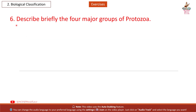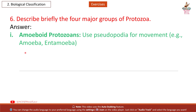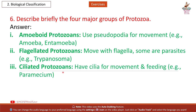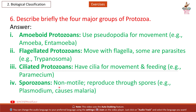Question 6: Describe briefly the four major groups of protozoa. Answer: (1) Amoeboid protozoans — use pseudopodia for movement, e.g., Amoeba. (2) Flagellated protozoans — move with flagella; some are parasites, e.g., Trypanosoma. (3) Ciliated protozoans — have cilia for movement and feeding, e.g., Paramecium. (4) Sporozoans — non-motile, reproduce through spores, e.g., Plasmodium, which causes malaria.